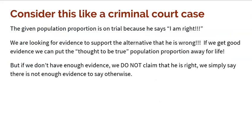This is a lot like a criminal court case, but instead we have a proportion. The proportion is claiming it's right, and our job is to support the alternative that it's wrong. If we get good solid evidence, we can reject the null and say it's wrong. Otherwise, we just don't have enough evidence, so we don't claim the null is right — we say there's not enough evidence to say otherwise.